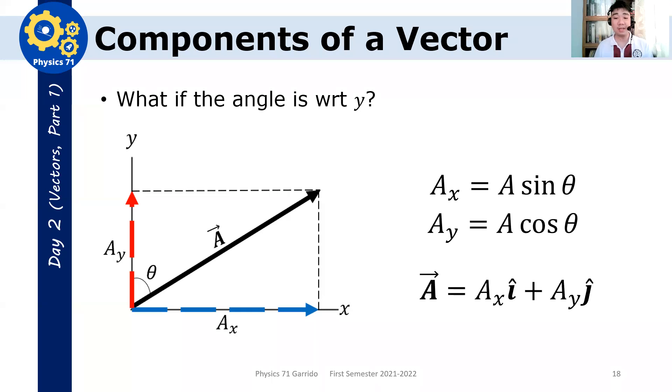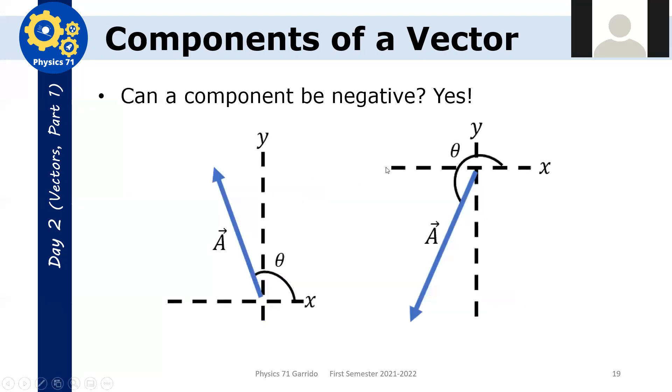But, nonetheless, the representation, a vector, is ax i-hat plus ay j-hat still. Is this clear? It's still the same.